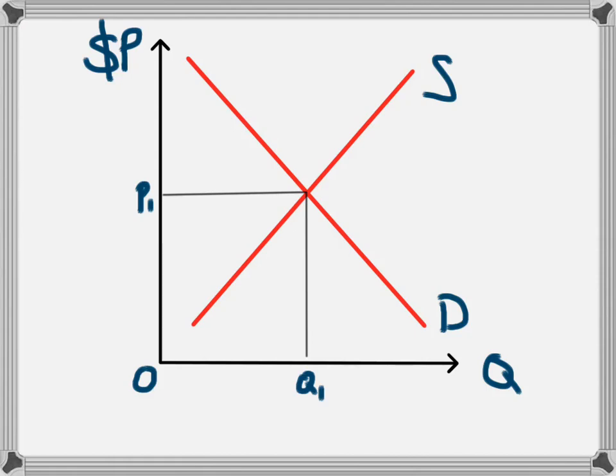The market forces will lead to an equilibrium price in this model of P1. By putting in a price ceiling, what we are going to do is stop the price from reaching that level. So we are going to keep the price lower than P1, for example at this level here. The intention is to keep the price at a lower price at PC rather than at P1.